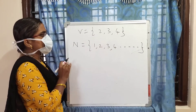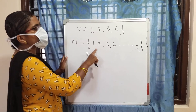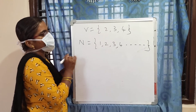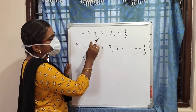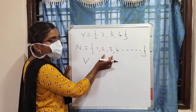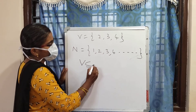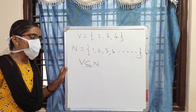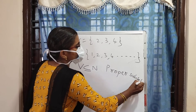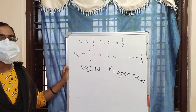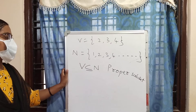If V equals {2, 3, 4} and the natural number set N is {1, 2, 3, 4, ...} up to infinity, then every element in V is also in N. But V is not equal to N. So V is a proper subset of N. This is called a proper subset, as opposed to a normal subset.